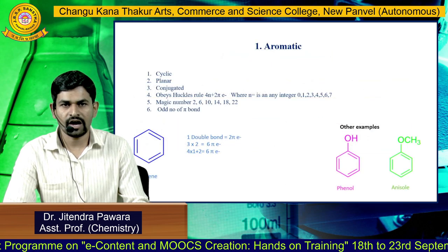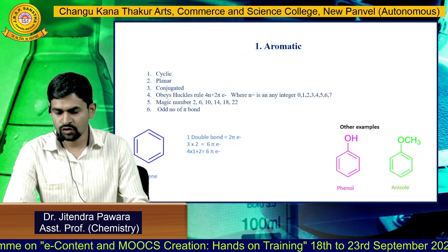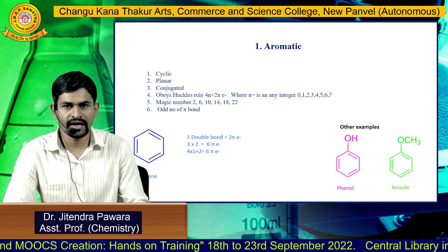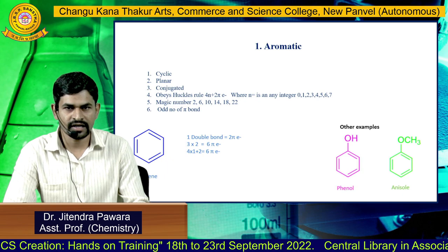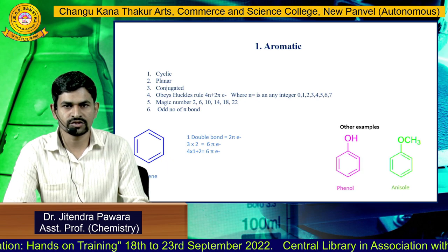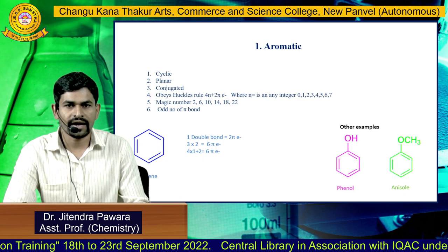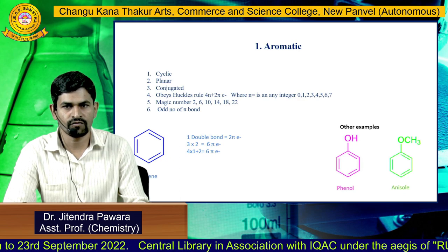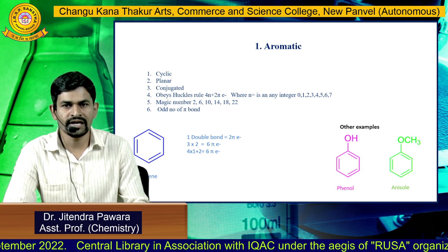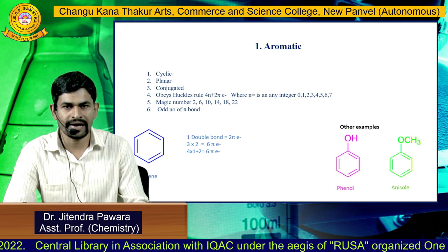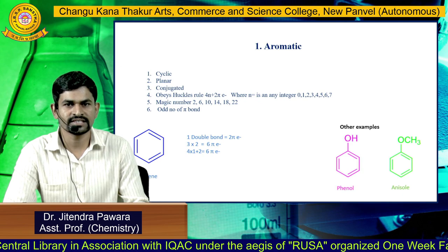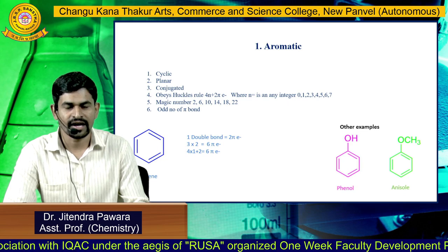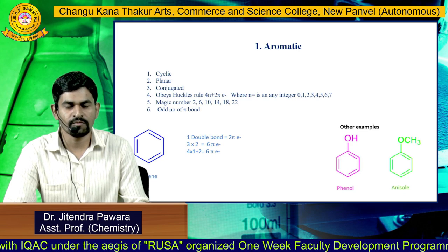For a compound to be aromatic, there are certain criteria. First, it should be cyclic; it should be planar; it should be conjugated; and it should obey Huckel's rule, that is four n plus two pi electrons, where n is any integer — zero, one, two, three, four, five. It should pass the fully delocalizable four n plus two pi electron count, that is two, six, ten, fourteen, eighteen, and twenty-two. These are also called magic numbers, and the compound should have an odd number of pi bonds.